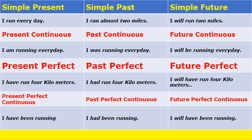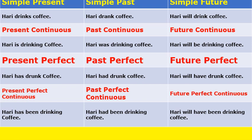One more example using the verb 'drink.' Simple present: 'Hari drinks coffee.' Present continuous: 'Hari is drinking coffee.' Present perfect: 'Hari has drunk coffee.' Present perfect continuous: 'Hari has been drinking coffee.' Simple past: 'Hari drank coffee' — verb in the second form. Past continuous: 'Hari was drinking coffee.' Past perfect: 'Hari had drunk coffee.' Past perfect continuous: 'Hari had been drinking coffee.' Simple future: 'Hari will drink coffee.' Future continuous: 'Hari will be drinking coffee.' Future perfect: 'Hari will have drunk coffee.' Future perfect continuous: 'Hari will have been drinking coffee.' This table will help you to understand tenses.